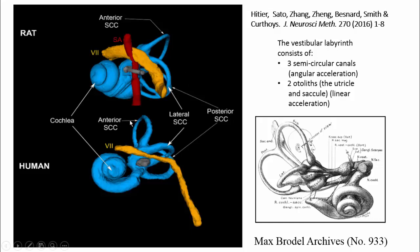This is a 3D recreation we did following micro-CT scanning in the rat and the human, showing at a different orientation the three semicircular canals as well as the utricle and saccule in relation to the cochlea. So the three semicircular canals encode angular acceleration in all planes, and the two otoliths — utricle and saccule — encode linear acceleration.